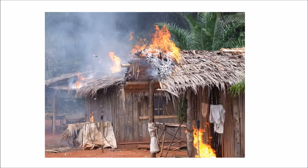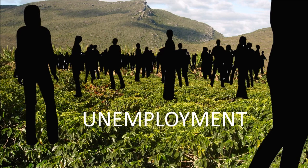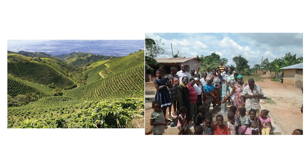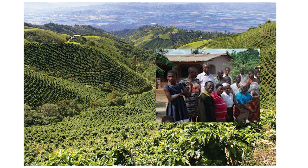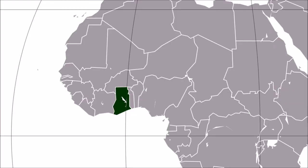And if the tax wasn't paid, the British burned their houses down. The tax immediately caused what we call unemployment — people looking for paid work — and the British then hired them to work in the coffee fields. Since the British desired only a portion of the village to work on a coffee plantation, the wage paid was more than enough to pay the tax. The British would pay the wage first, then the people would pay some of it back in taxes, and the rest was savings that could be used to buy things from other people.